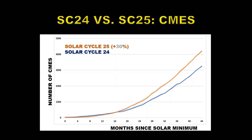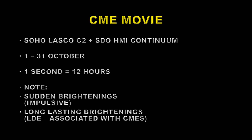Here's a comparison between Solar Cycle 24 and Solar Cycle 25 for the last four years, and you can see that Solar Cycle 25 is outperforming Solar Cycle 24 by about 30%, which is very similar to what it was doing last month. We'll take a look at a coronal mass ejection movie using the SOHO LASCO C2 plus the Solar Dynamics Observatory HMI continuum — that is, the sunspots.